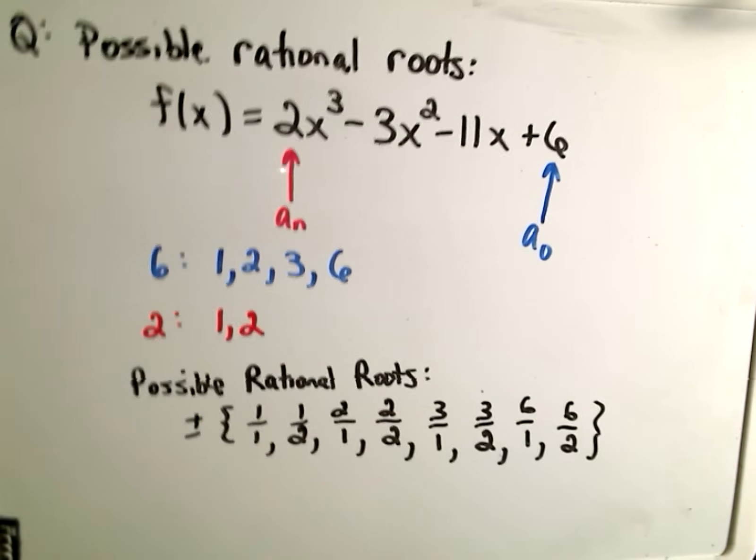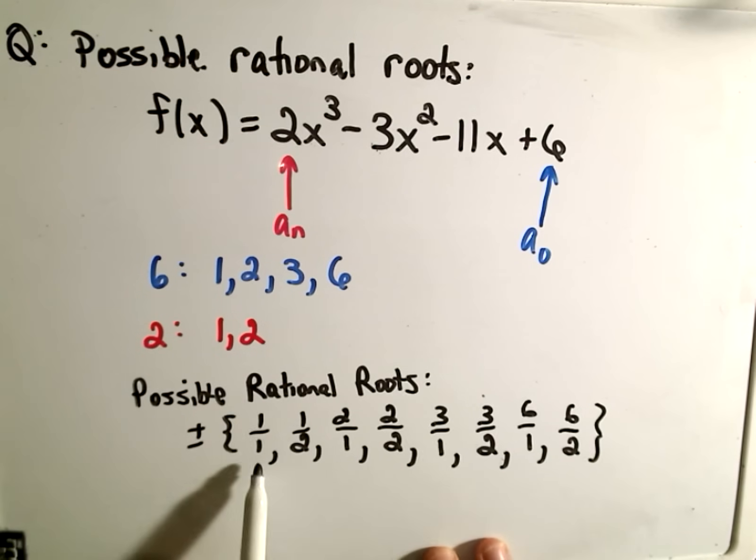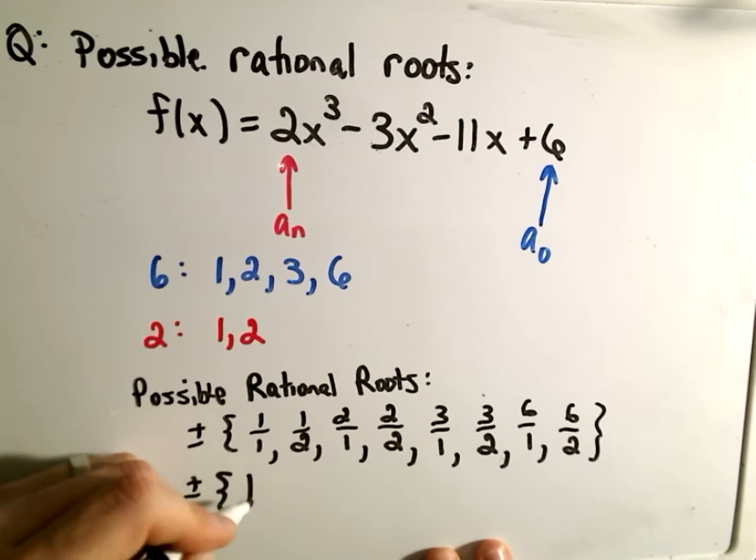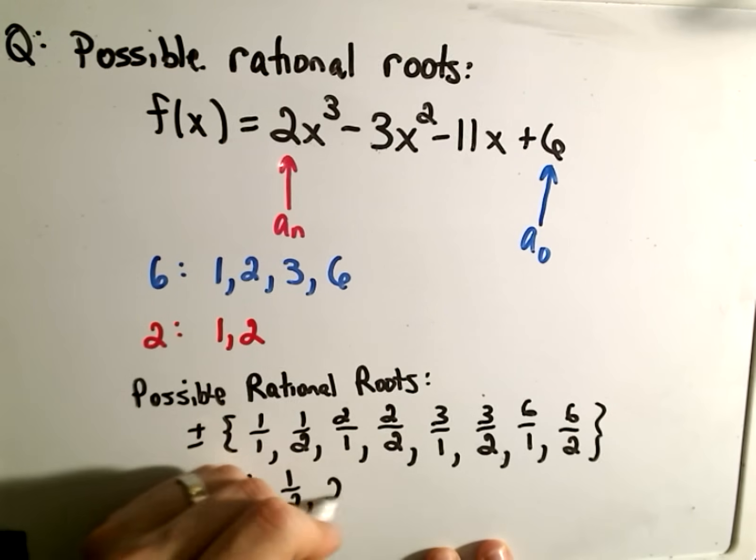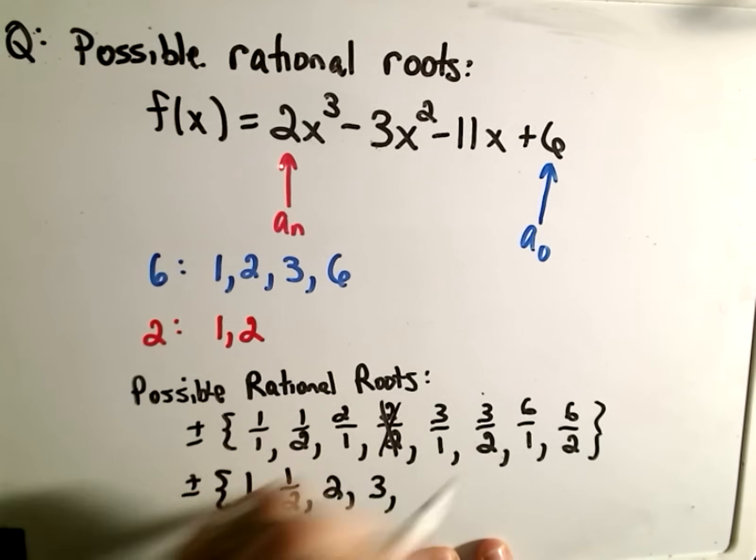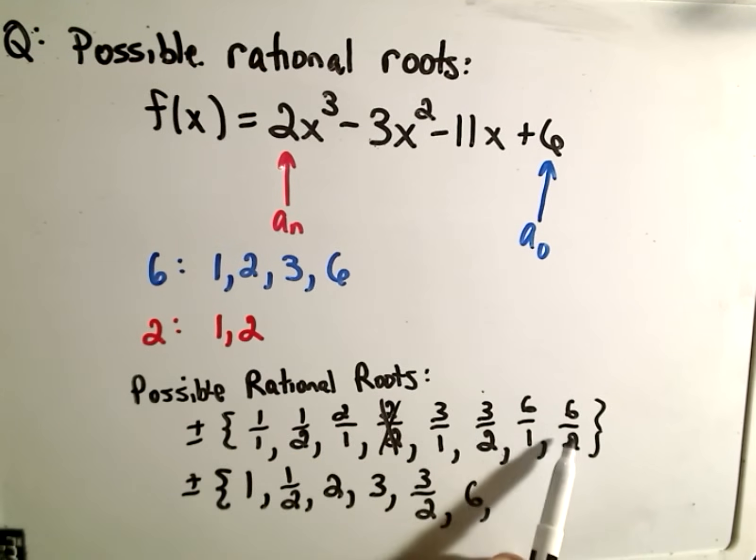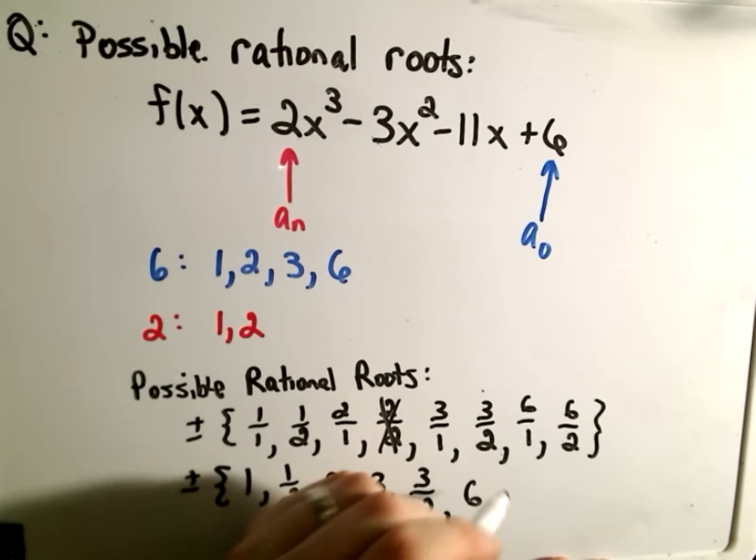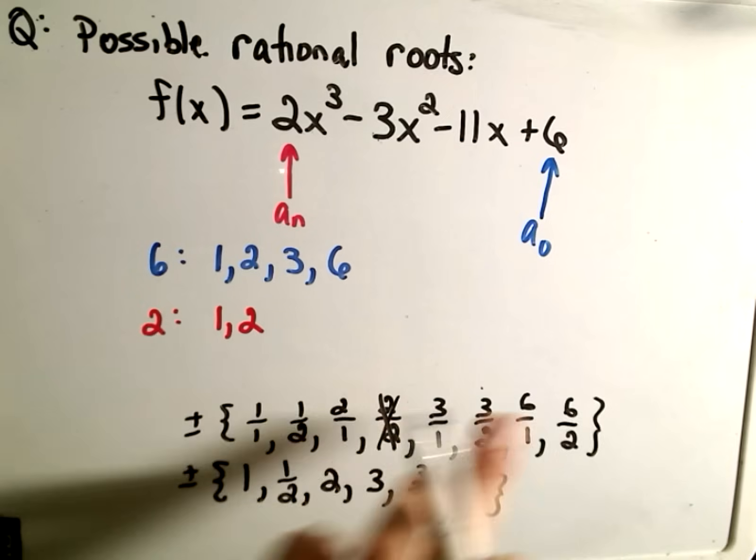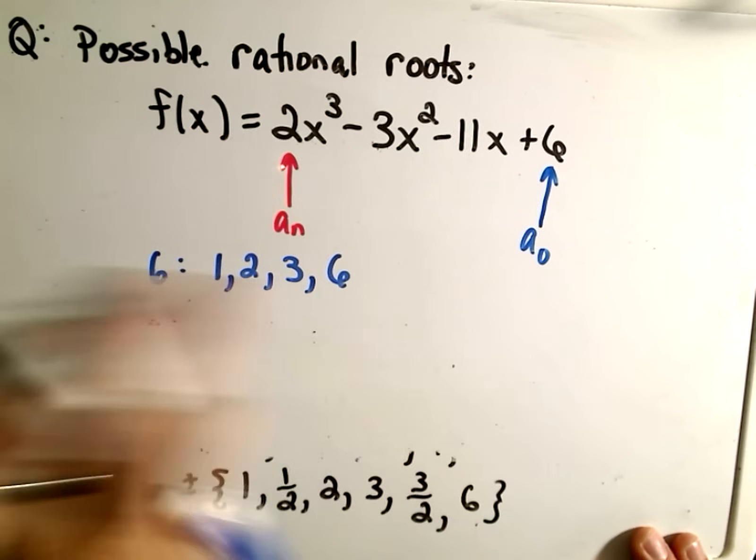These are all the possible rational roots for this polynomial. Remember a root is just a number that if we plug it in for x, we'll get 0 out at the end. So we have 1/1 which is 1, 1/2 which is a half, 2/1 is 2, 2/2 is 1 so we already have that, 3/1 is 3, we have 3/2, we have 6, and 6/2 is 3 so we already have that one listed as well. So these are our possible rational roots: ±{1, 1/2, 2, 3, 3/2, 6}.